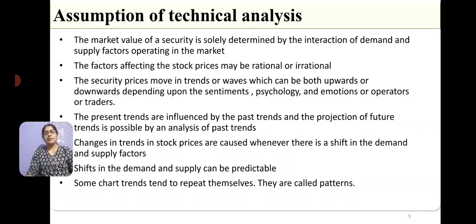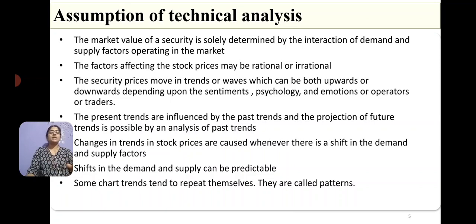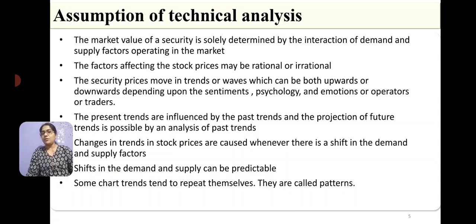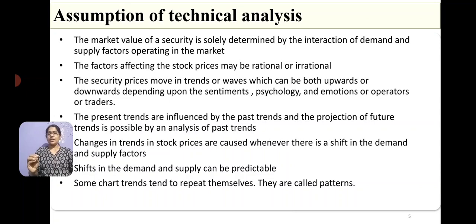The factors affecting stock prices may be rational or irrational. The factors which affect demand and supply in the market could be rational — meaning you can make clear sense of why the price increased or decreased — or they could be irrational, where you cannot easily explain why the stock price changed. Additionally, security prices move in trends or waves, which can be both upward or downward depending on the sentiment, psychology, and emotions of operators or traders.